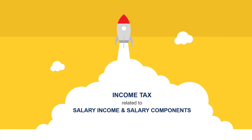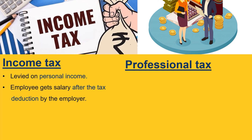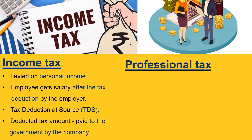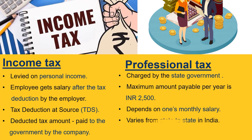Now let's understand income tax related to salary. The tax levied on one's personal income is called income tax. Usually an employee gets their salary after tax deduction by the employer — this process is called Tax Deduction at Source, popularly known as TDS. The deducted tax amount is paid to the government by the company. Professional tax is a tax charged by the state government in order to let an individual practice a certain profession. The maximum amount payable per year is Rs. 2,500, and it depends on one's monthly salary and the state in which one works — the professional tax levied varies from state to state in India.